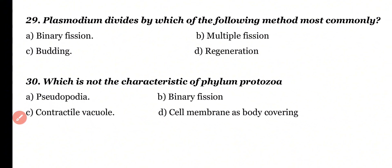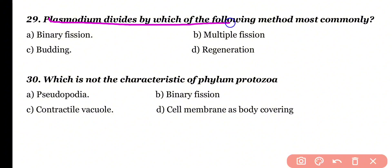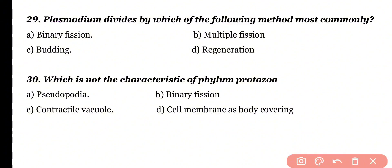Question number 29: Plasmodium divides by which of the following methods most commonly? Binary fission, multiple fission, budding, or regeneration? Correct answer is option B. Plasmodium most commonly divides by means of multiple fission.